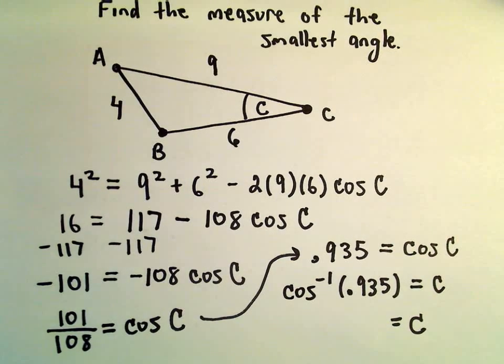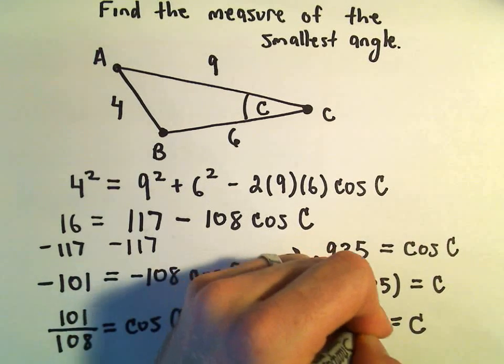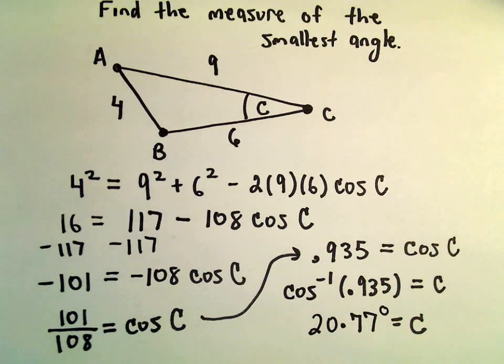Let me double check one more time. If we do the inverse cosine of 0.935, I'm getting this to be 20.77 degrees after rounding.